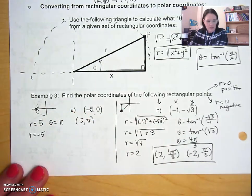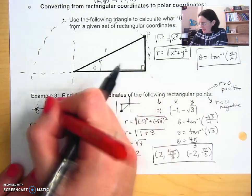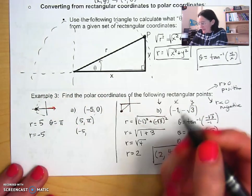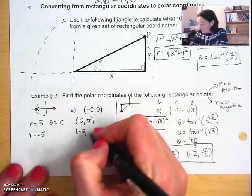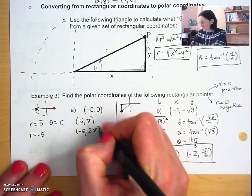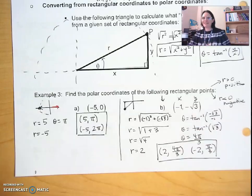But then when I want the opposite direction, when I want r negative five, I'm going to go this way. So at negative five, that's going to give me an angle or a theta at two pi. And done.